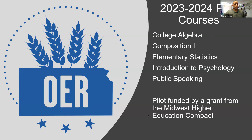As for the five courses we've done this for: college algebra, composition one, elementary statistics, introduction to psychology, and public speaking. Those were chosen based on enrollment and other factors we considered to look at what sort of impact we could possibly see. The funding used to lead this work was from the Midwest Higher Education Compact, a pilot grant they gave to our OER steering committee.